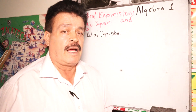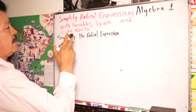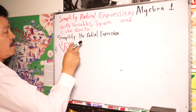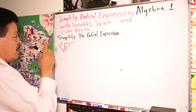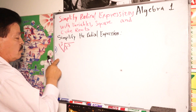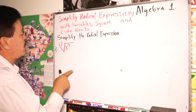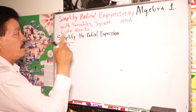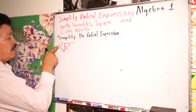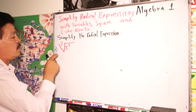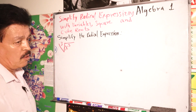Welcome to Algebra 1. Our topic for today is simplify radical expressions with variables — square and cube roots. We will simplify the radical expression. I will show you a couple of problems belonging to this topic. The first one is the cube root of x to the third power.